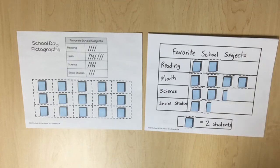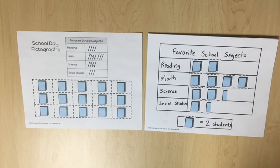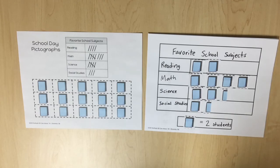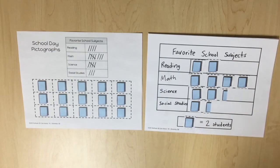Examples of guiding questions to help students draw conclusions include: how many students picked science as their favorite subject, and how many more students picked math than science? To guide predictions, ask: can you predict what data might be represented if a different classroom in the same school created a similar graph? Sample predictions include that students in another class might also like math the most, or based on the graph, might also like social studies the least. Additional pictographs with intervals of 5 and 10 have been provided, and students should also practice drawing conclusions and making predictions from these.